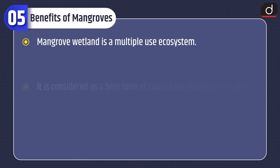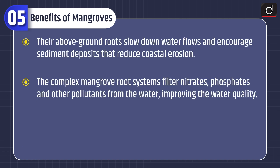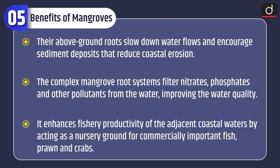Sundarbans was the first mangrove forest in the world brought under scientific management as early as 1892. Now let's look at the benefits of mangroves. Mangrove wetland is a multiple-use ecosystem. It is considered the best form of coastal bioshield since it plays a critical role in reducing the impact of cyclonic storms, hurricanes, and tsunamis on human lives and properties. Their dense roots help bind and build soils. Their above-ground roots slow down water flows and encourage sediment deposits that reduce coastal erosion. The complex mangrove root systems filter nitrates, phosphates, and other pollutants from the water, improving water quality.